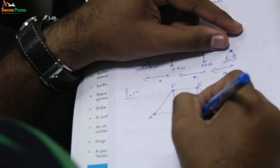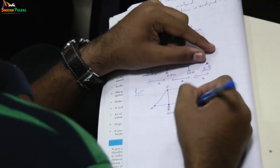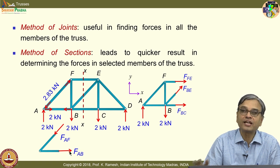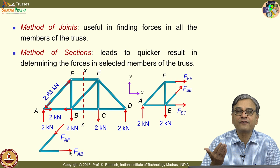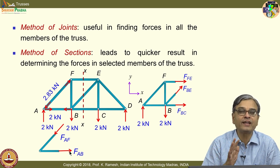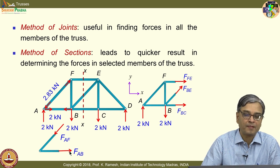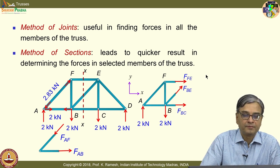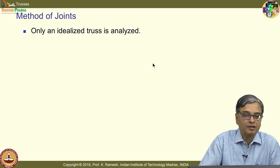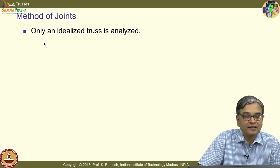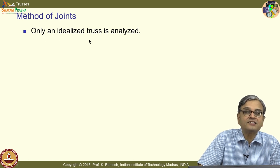In the method of sections, I can essentially use three equations of equilibrium to find the unknowns. On the other hand, when I isolate a joint, I have a concurrent force system. So I can use only ΣFx = 0 and ΣFy = 0, confining our attention to two-dimensional analysis. In method of joints, you have to be very clear: only an idealized truss is analyzed.